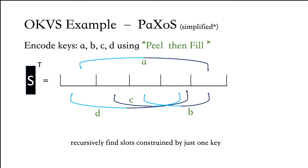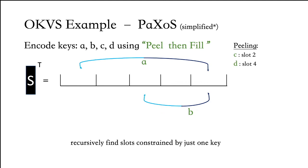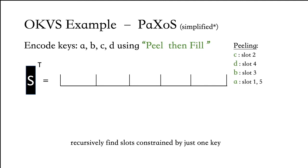Next, we identify that position 4 is also constrained by a single key, which is key D, and delete the constraints associated with D. Now position 3 is identified by key B, so we delete its constraints. Finally, for key A, we have two positions, so we just delete this key. Once we have successfully peeled the keys, we fill the slots in reverse order.